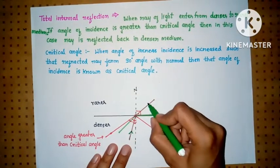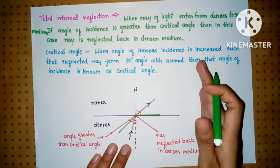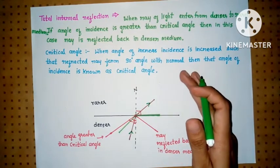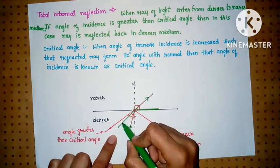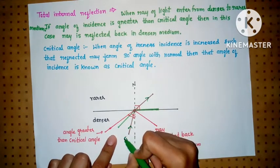When going from denser to rarer medium, it bends away from the normal. When we increase the incident angle, in the first case we took this angle. In the second case we increased the angle of incidence.